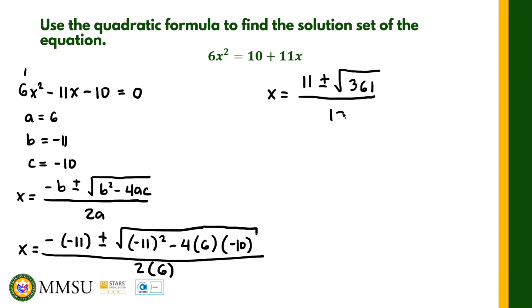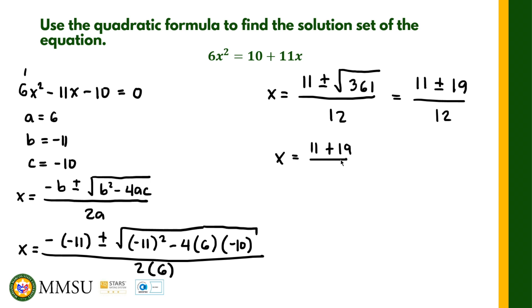We have two values of x in this case. The square root of 361 is 19, so we can rewrite this as 11 plus or minus 19, all over 12. The first value of x is 11 plus 19 over 12, which equals 30 over 12, and that simplifies to 5 over 2.